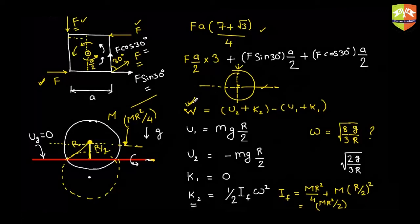Substituting into the energy equation gives the angular velocity. A common mistake is using the wrong moment of inertia. Always identify whether there is a fixed axis — if so, use half·I_fixed·omega squared for kinetic energy. If no fixed axis is apparent, use half·I_cm·omega squared plus half·m·v_cm squared, which will give the same result.